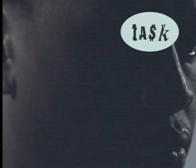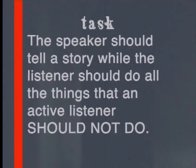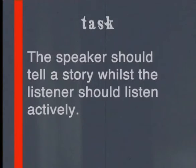Now it's time for our task. For your task today, you will need to find someone to work with. One of you will be the listener and the other will be the speaker. The speaker should tell a story while the listener should do all the things that an active listener should not do — for example, the listener could fiddle with something, interrupt the speaker, avoid eye contact and so on. Then switch roles and try the exercise again. Only this time, the speaker should tell a story while the listener should listen actively.